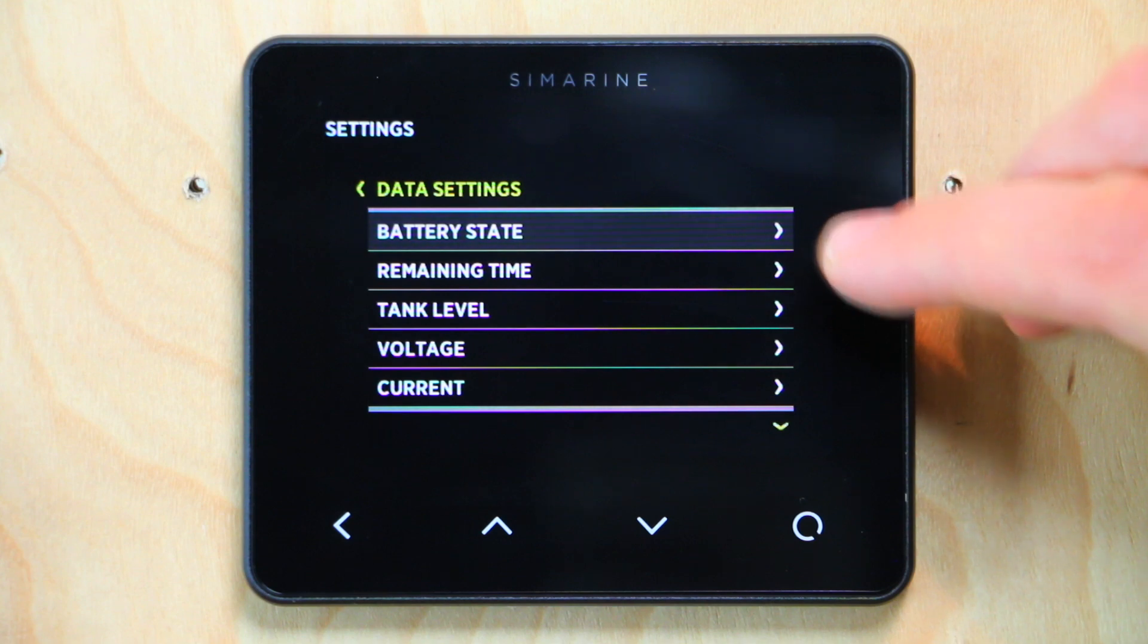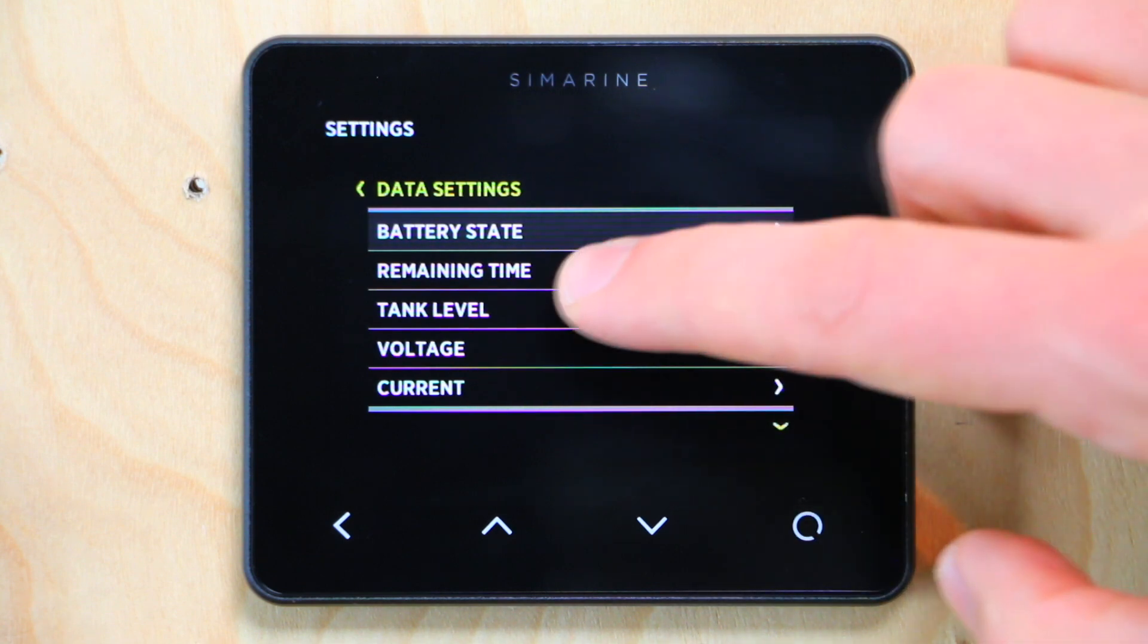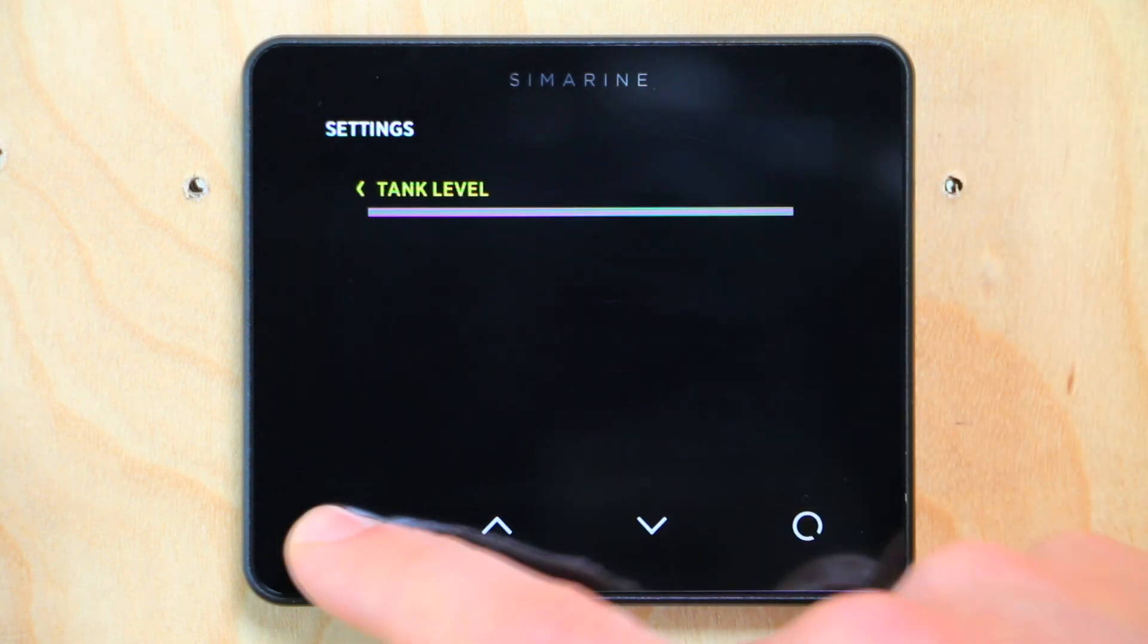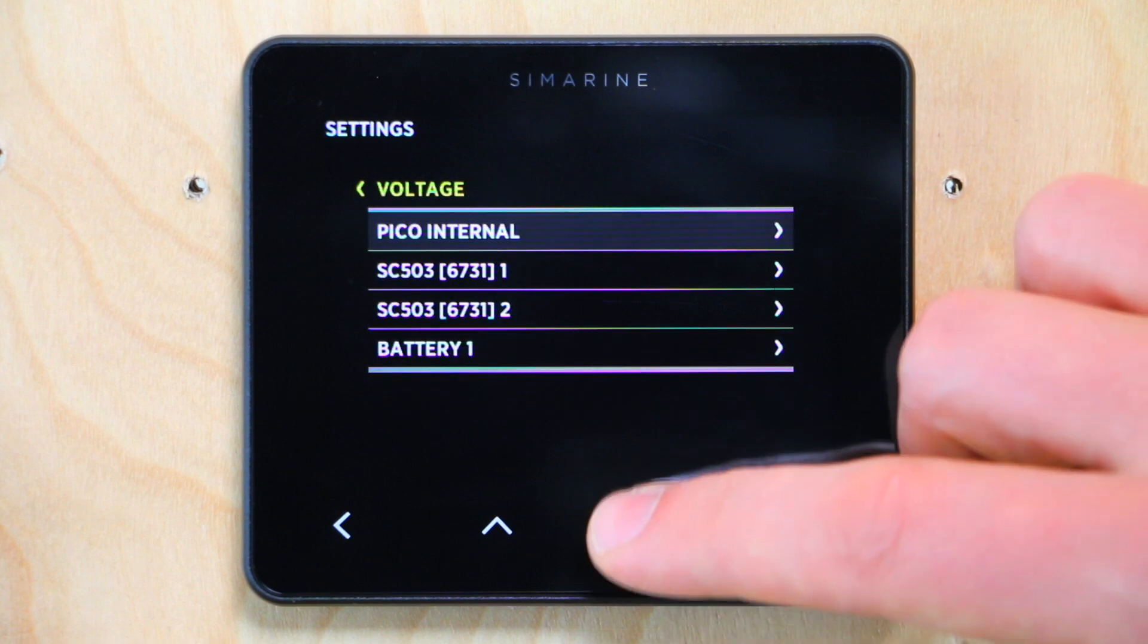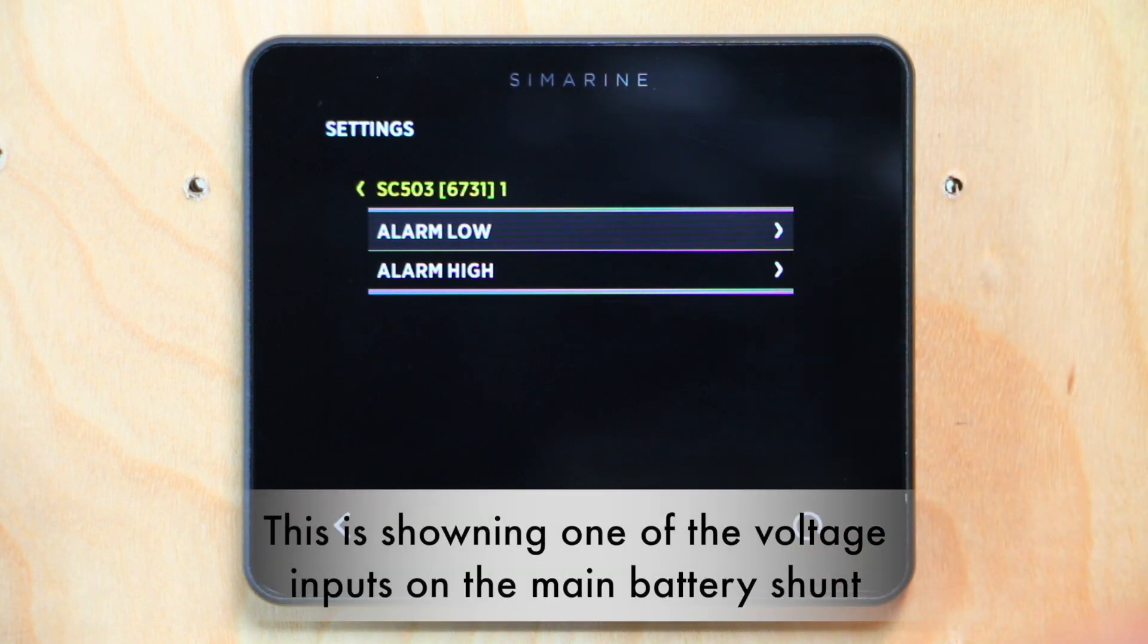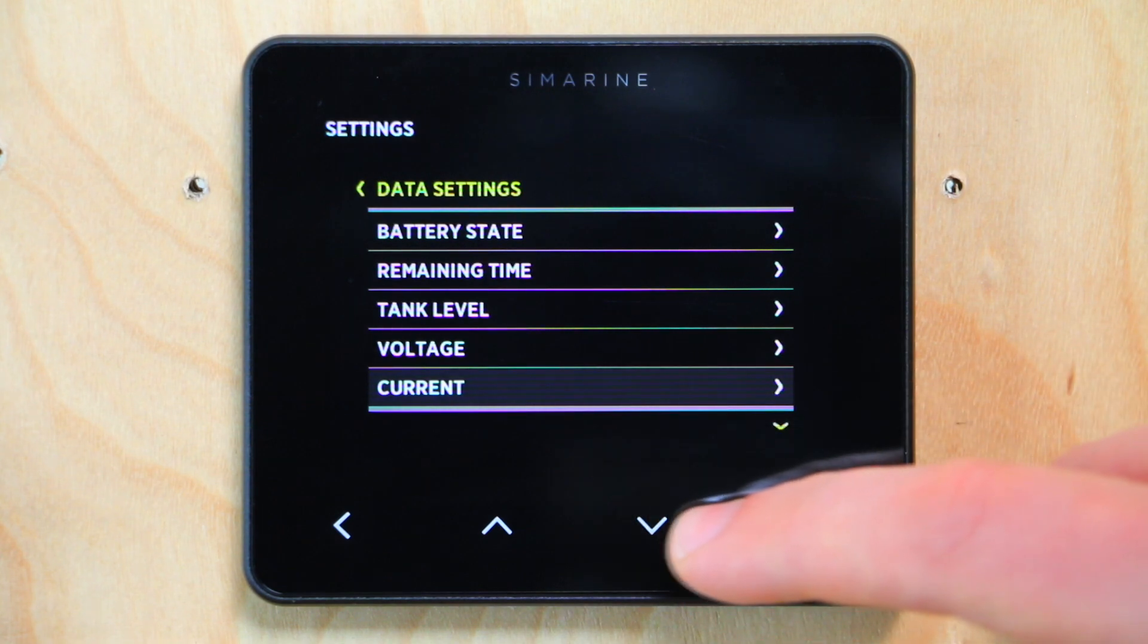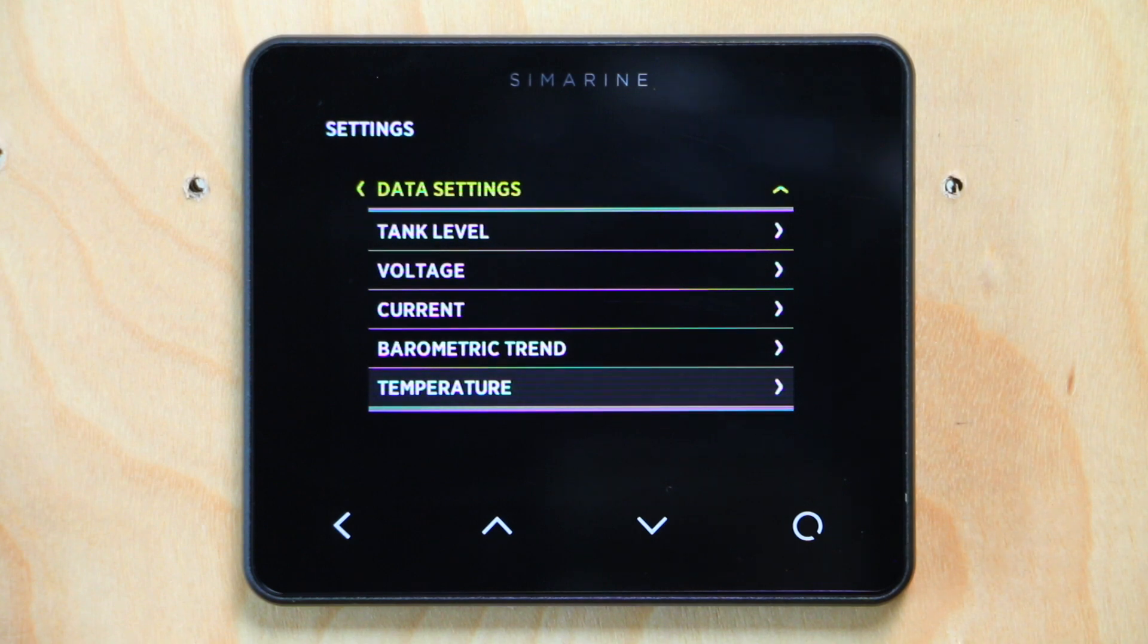Let's go back and we're going to go down to data management. Data management is where we're going to go in and set all of our alarms. These are all the criteria with which you can set up an alarm: battery state remaining time, tank level for low or high tank levels, voltage for your starter battery or main battery bank. The Pico has an internal voltmeter, but we could use our shunt's voltmeter and set a low voltage or high voltage alarm. Current, barometric trend, or temperature. Any of these parameters can be used to set up an alarm in the Pico.